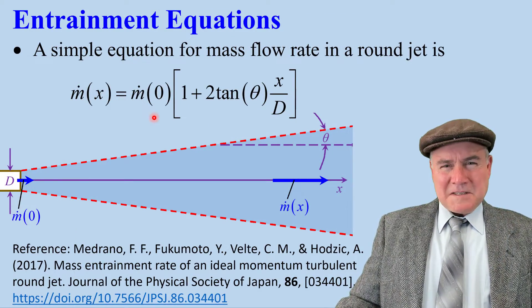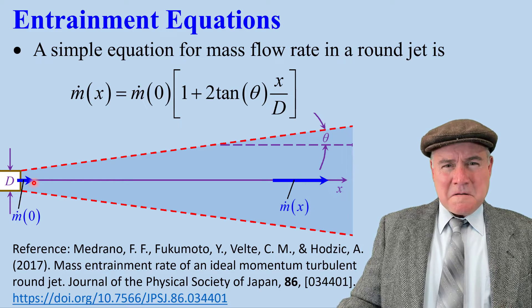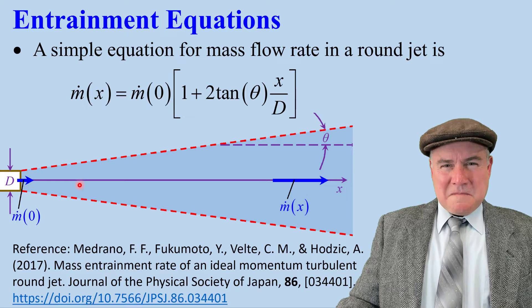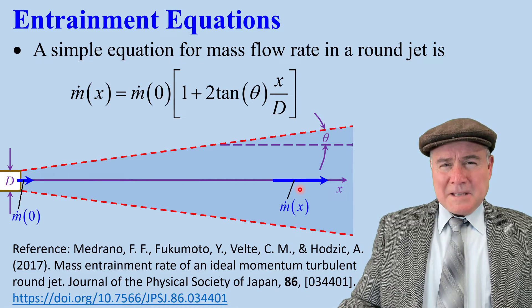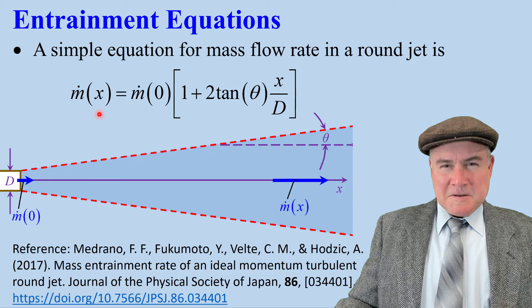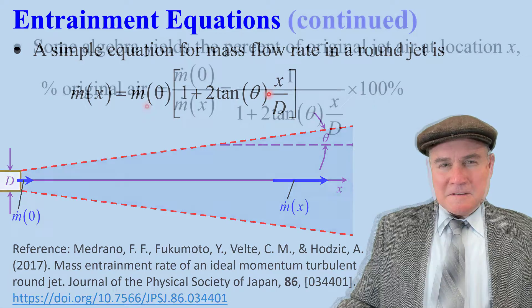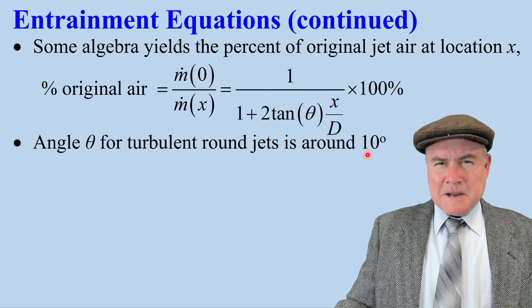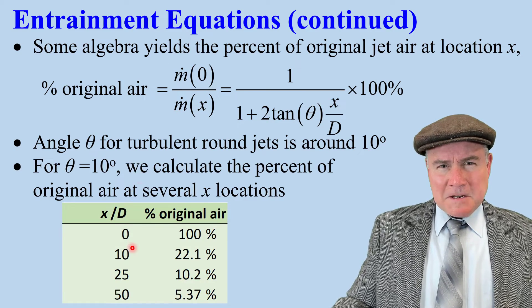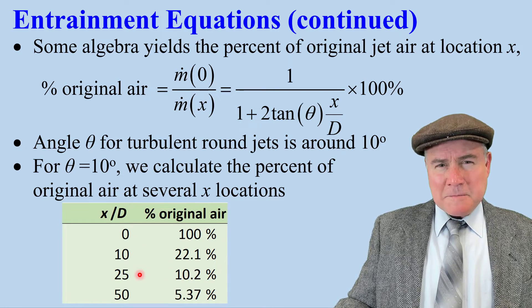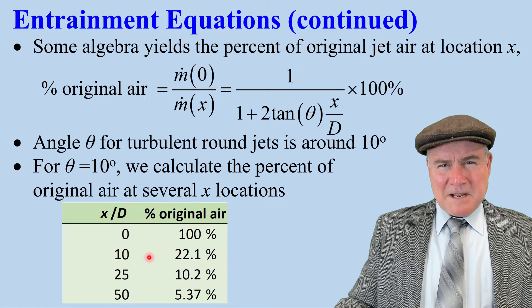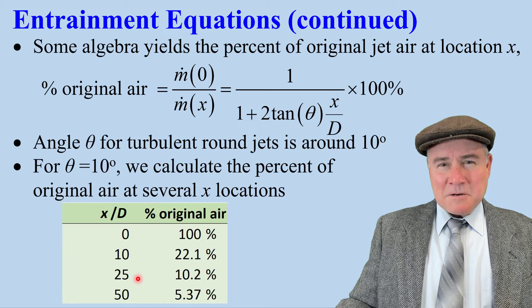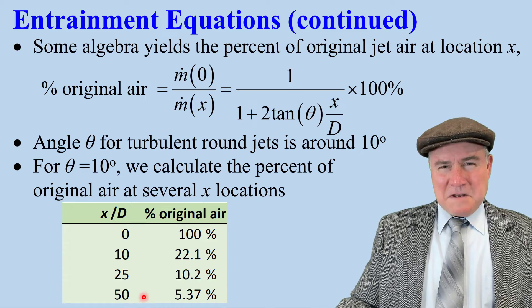Now some equations. This is a nice simple equation for entrainment of mass. M.0 is the initial mass flow rate — 100% hot air. M.0 increases due to entrainment, and at some location x, this is the equation for M.x. You can see that M.x grows as x increases. A little bit of algebra reveals the equation for the percentage of original air in the jet at some location x. Angle theta for a typical turbulent jet is about 10 degrees. Using this equation, the percent original jet air as a function of x over diameter: at zero, it's 100% jet air, but as x increases, it's only about 10% when you're 25 diameters away, and only about 5% when you're 50 diameters away. That's why the hair dryer air feels cool when you're standing this far away.